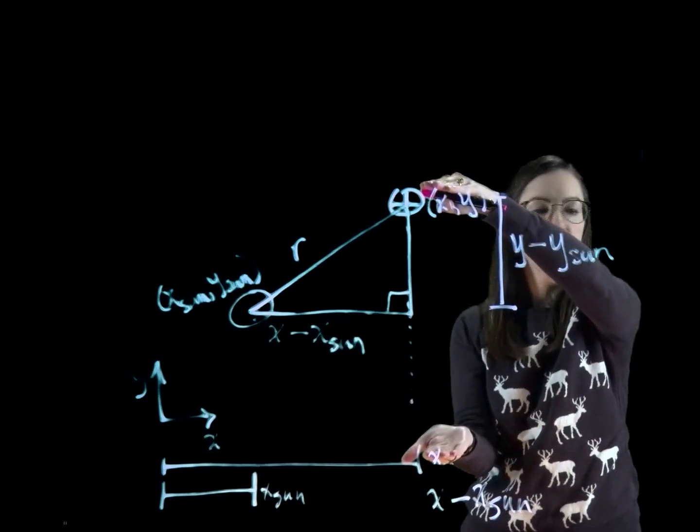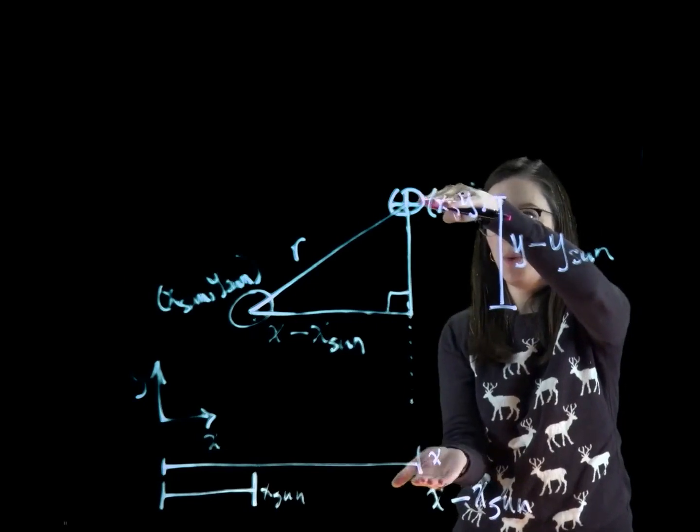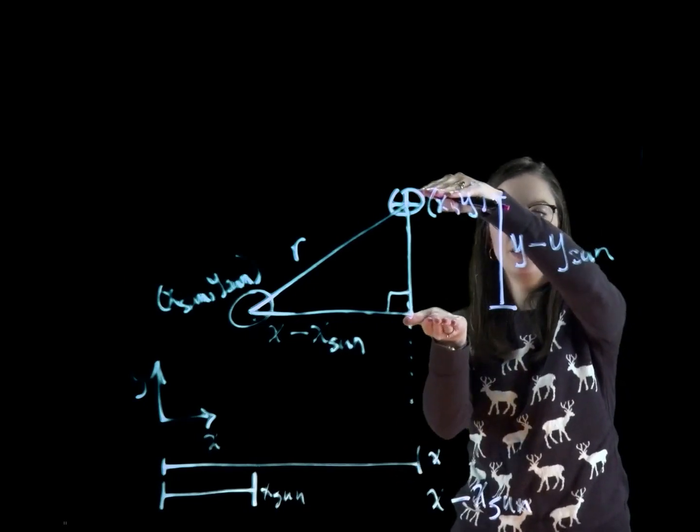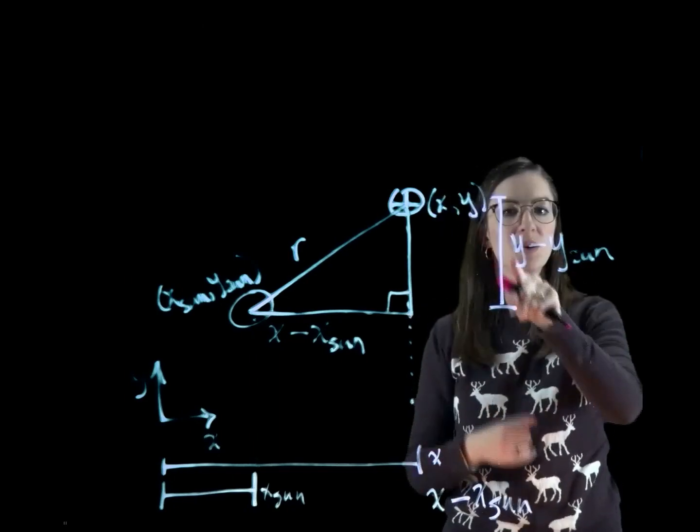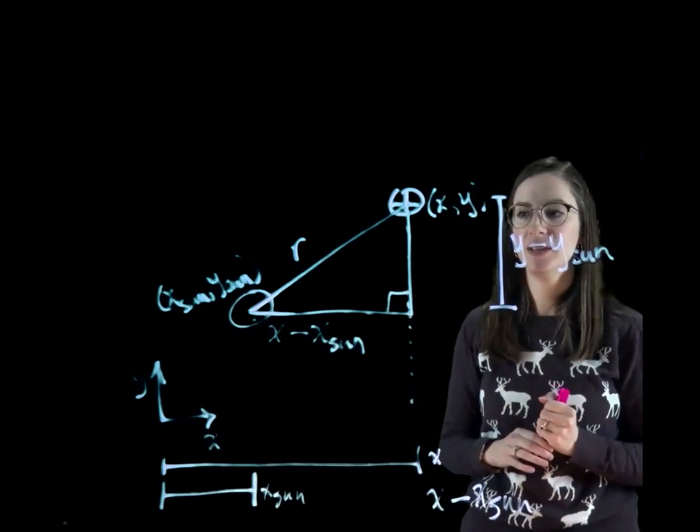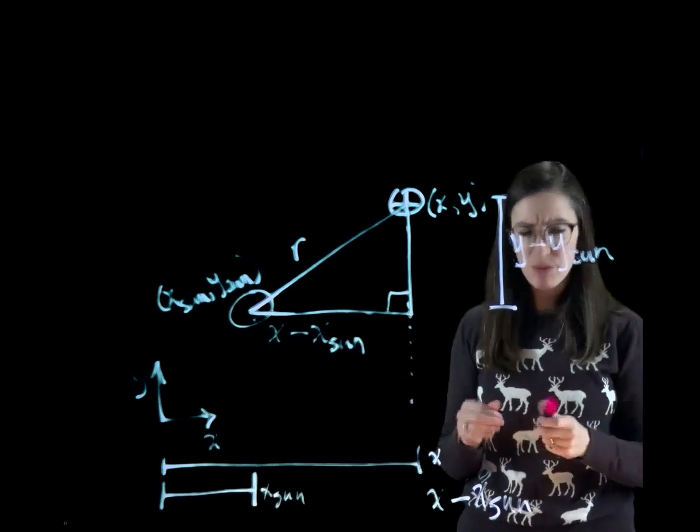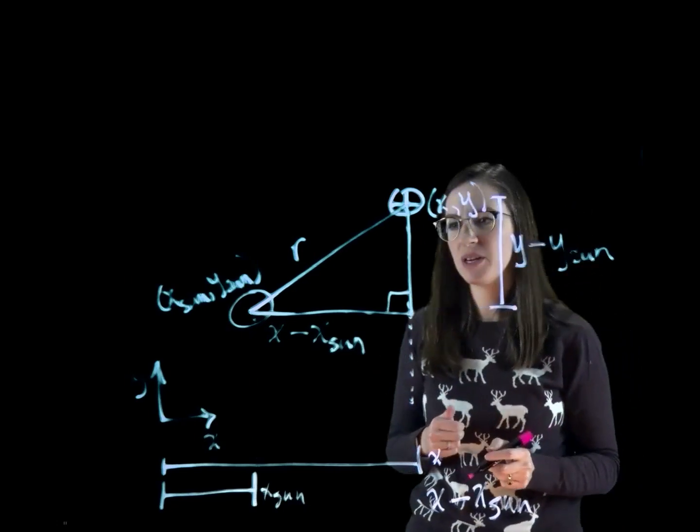So we do the same thing with our y. So we would take our y minus y sun. And that will give us y minus y sun. So you've probably seen this in your trigonometry class.